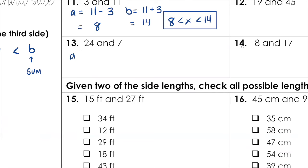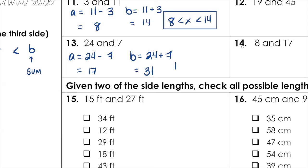Let's do another one. The difference: 11 minus 3 equals 8 — that's our lower bound. For B, the sum: 11 plus 3 equals 14 — that's our upper boundary. So X must be greater than 8 but less than 14.